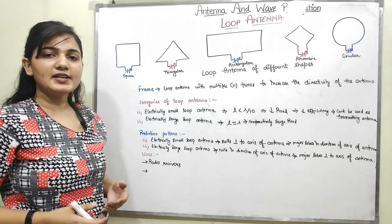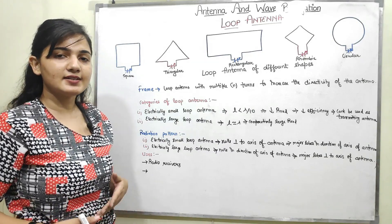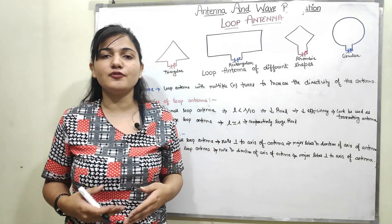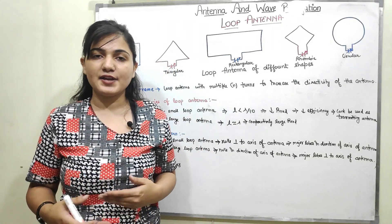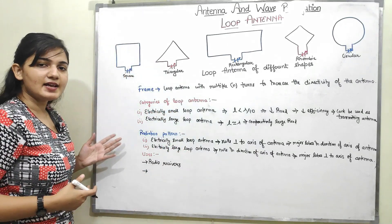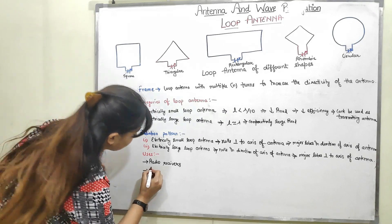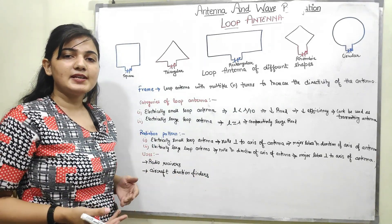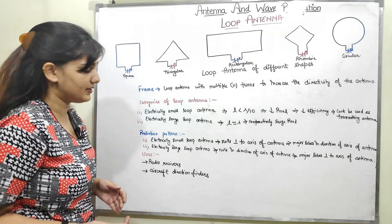The second application of loop antenna is direction finding. We will discuss this application in a separate video. As of now, loop antennas are used in aircraft direction finders.